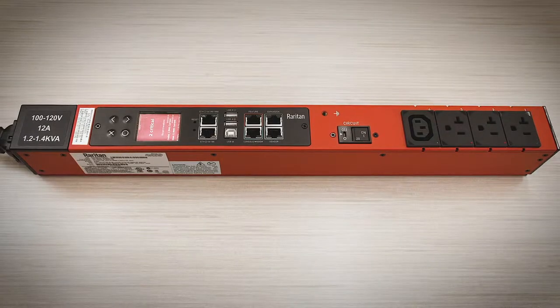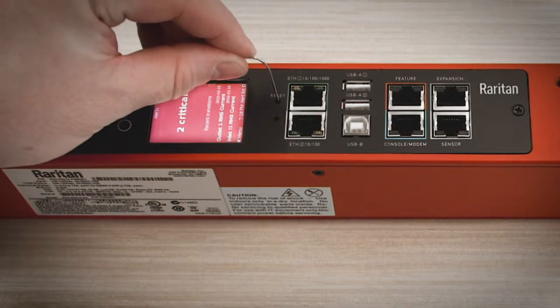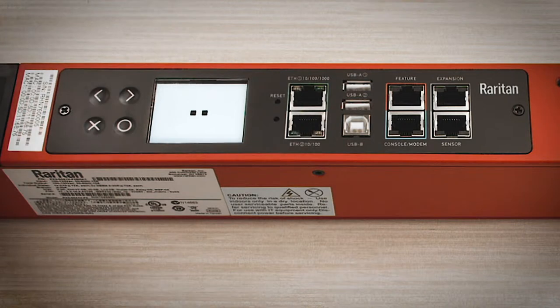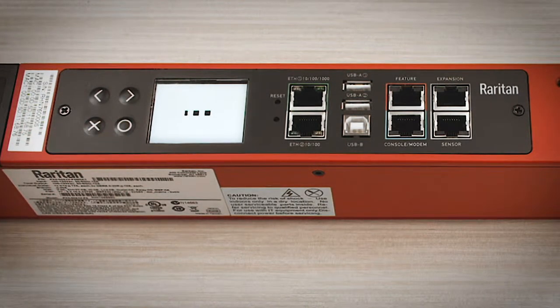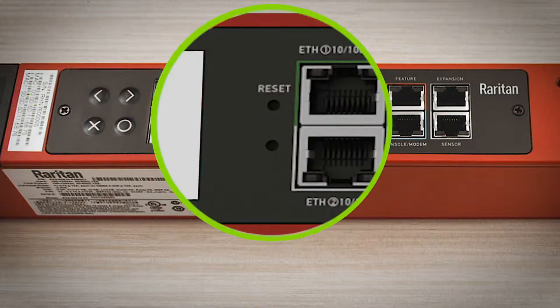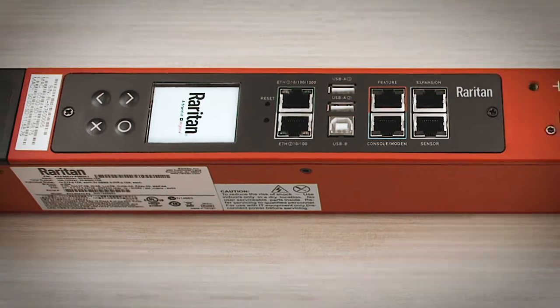The simplest way to reset a controller is with the pinhole reset button. This is common on many types of electronics. The reset button is located inside the small pinhole near the display panel on the PDU, clearly marked reset. Pressing this button is the quickest way to reset the controller without any loss of power to the outlets.